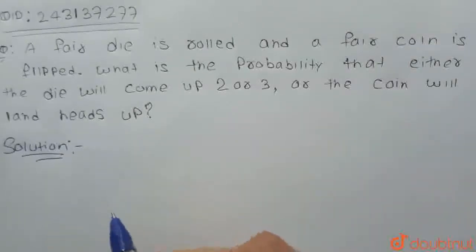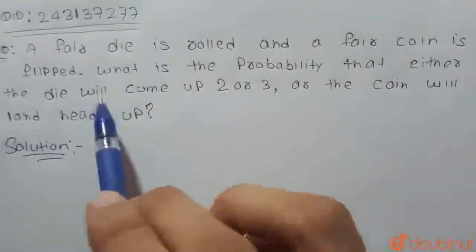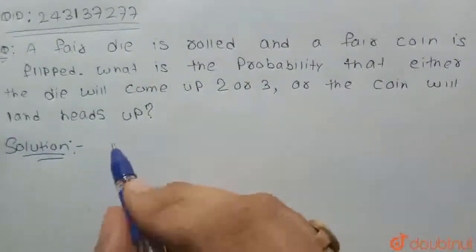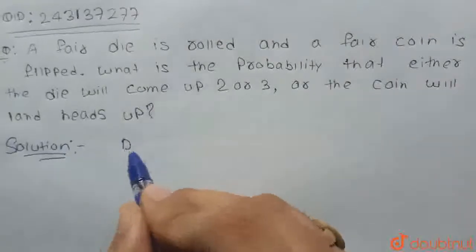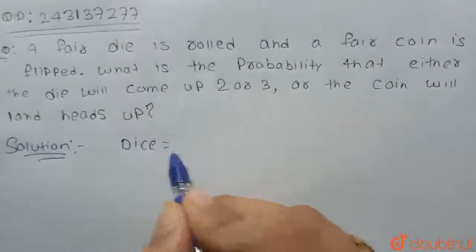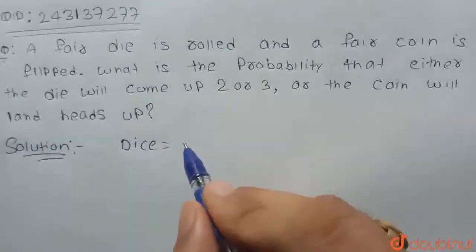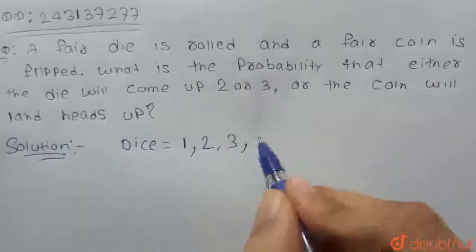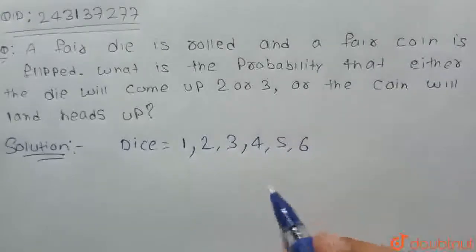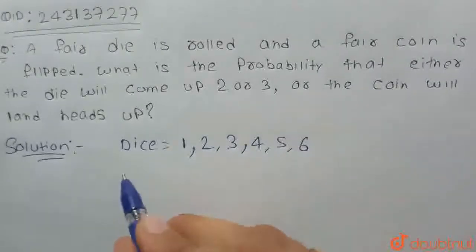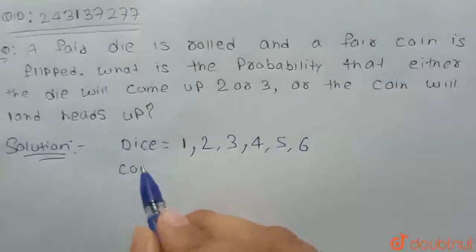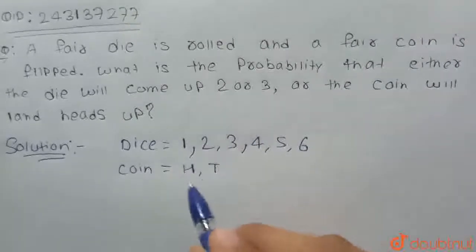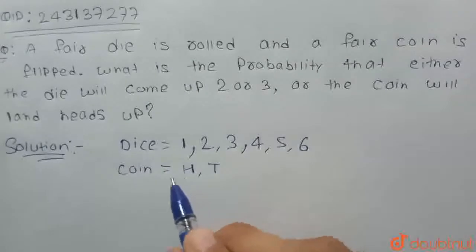So let's see the solution. As we have given, we have a fair die and a fair coin. As we know, the die has how many total number of possibilities? It can come 1, 2, 3, 4, 5 and 6 — so there are 6 possibilities. And for the coin, how many possibilities? That is heads or tails, so the total number of outcomes is 2.